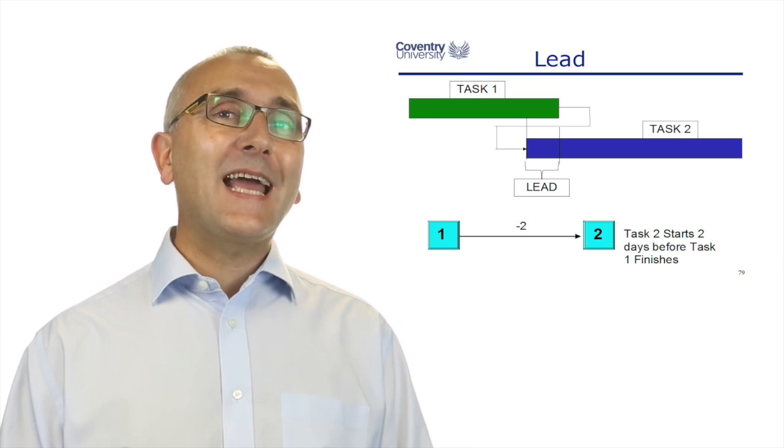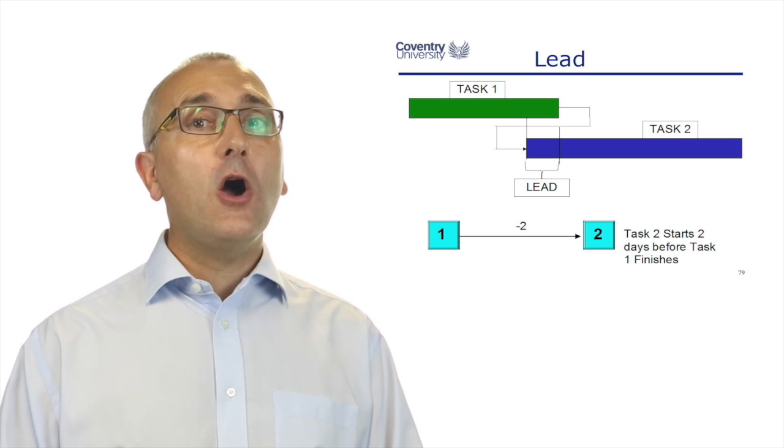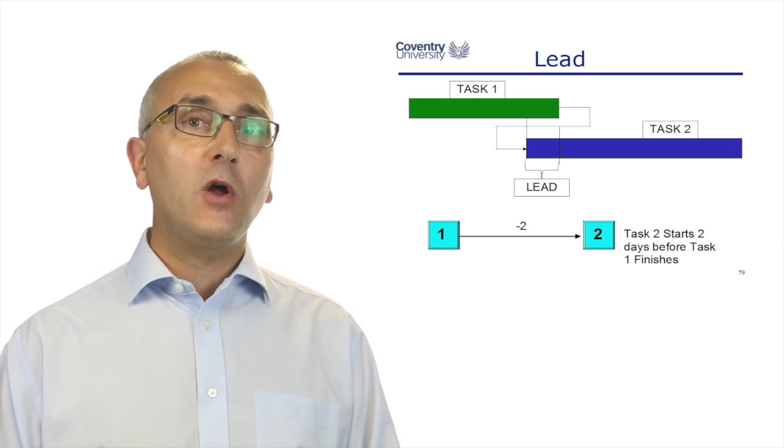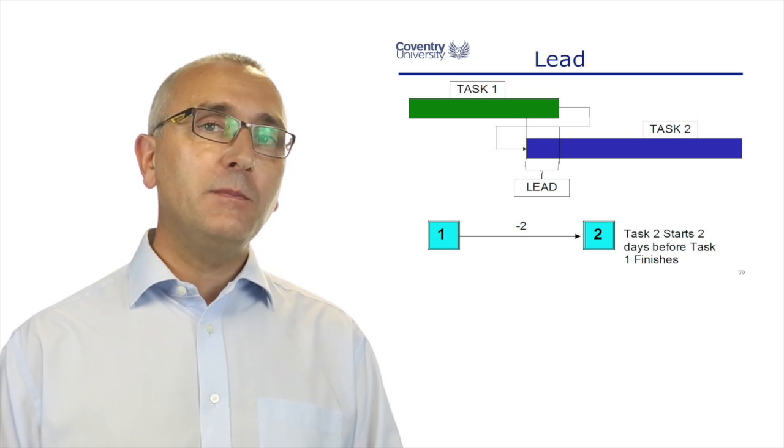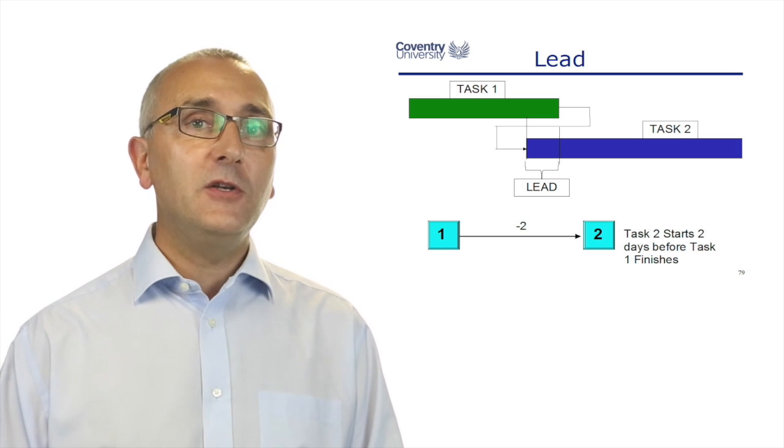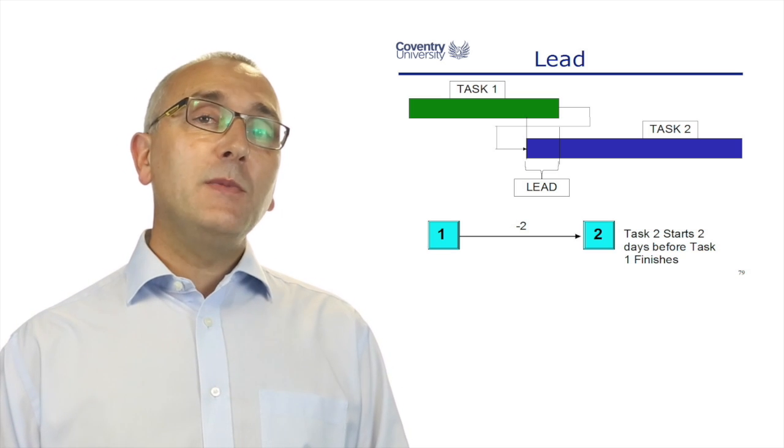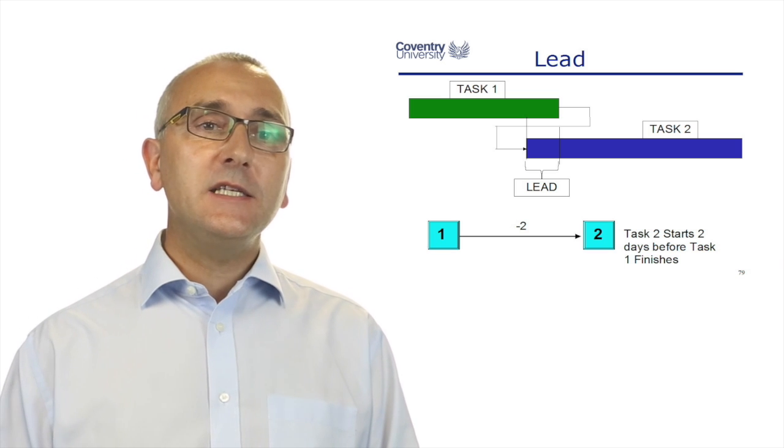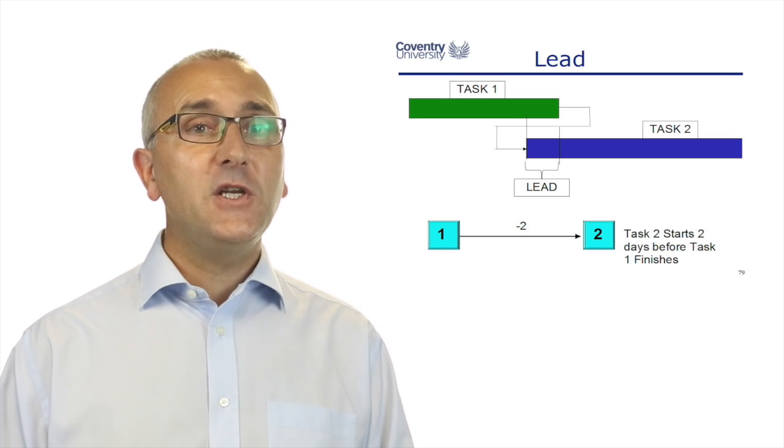On the Gantt bars, on the top of that slide, task two is overlapping with task one by some period of time. On the dependency chart, I've indicated it with a negative number, and this means that task two can start two days before task one finishes.